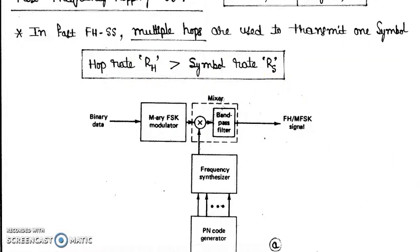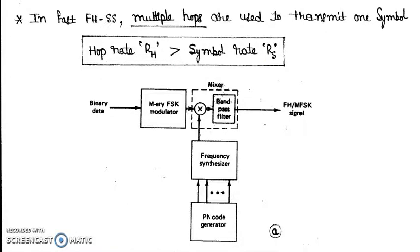Now you can see this is the block diagram of your MFSK transmitter. So binary data is there, then you have M-ary FSK modulator and the PN sequence is generated and fed to the frequency synthesizer. Then the M-ary FSK modulated wave is multiplied with the frequency synthesizer output and it goes to band pass filter and then you are getting the FH MFSK signal.